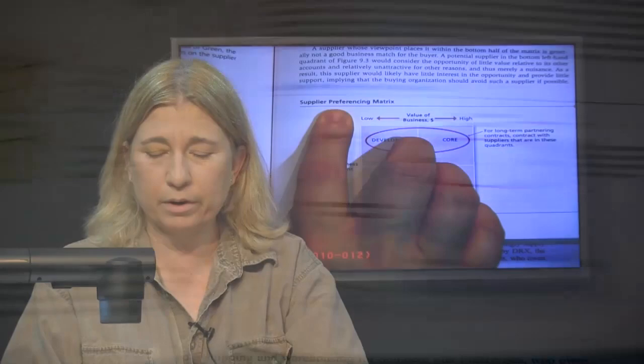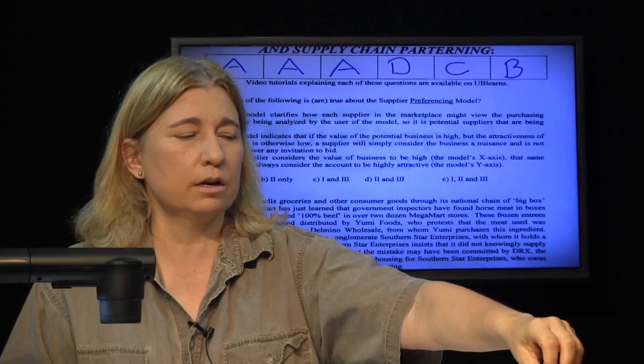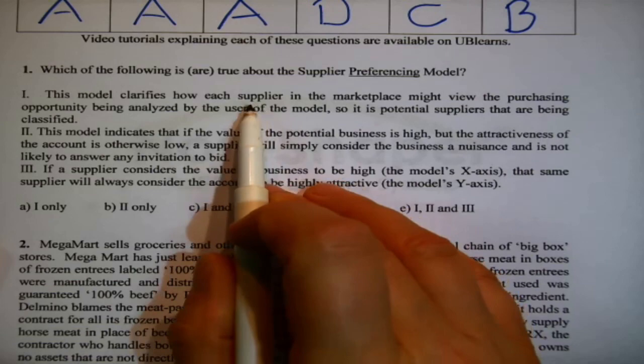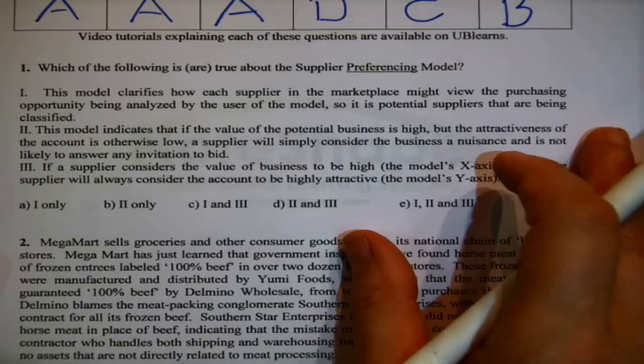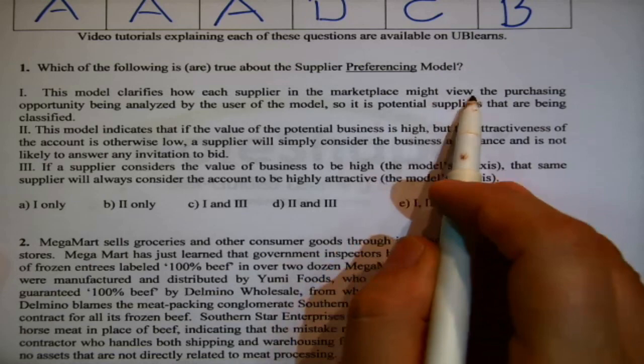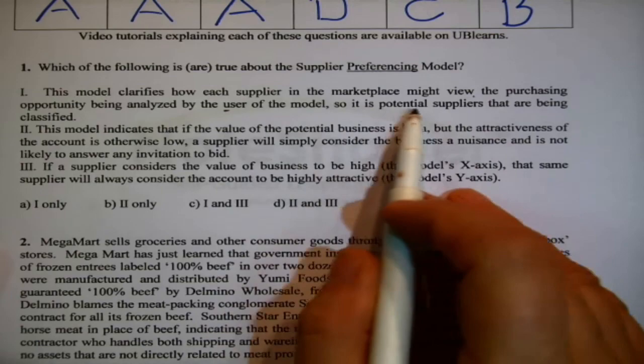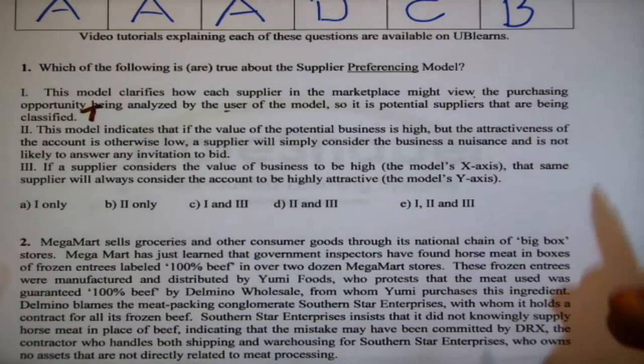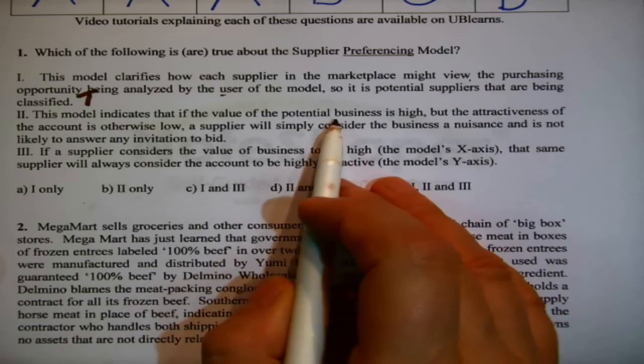This particular first question — notice what was underlined — it's asking about supplier preferencing. So this is about that model that helps us classify the potential attitude that a supplier might take towards us. That's how I remember the supplier preferencing model.